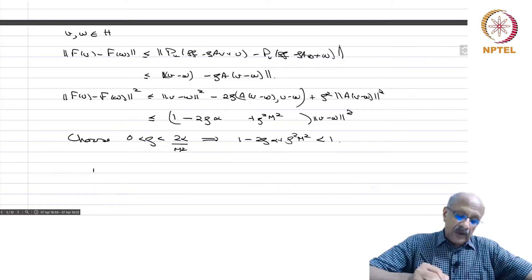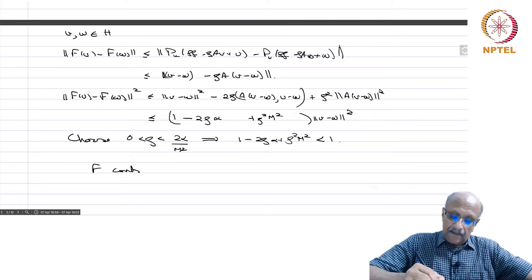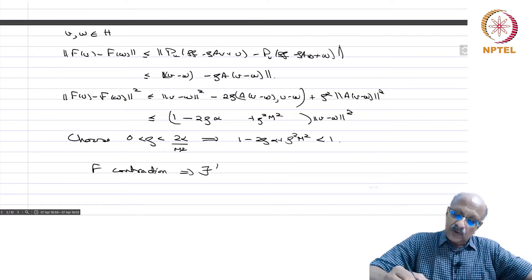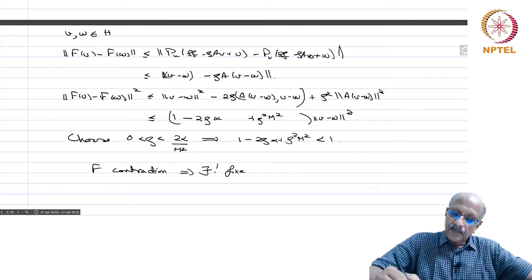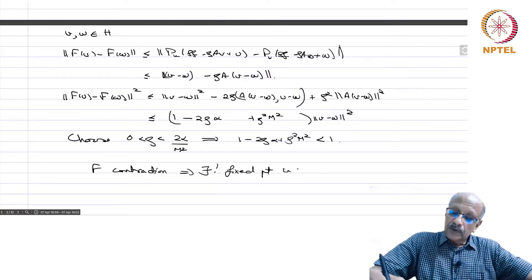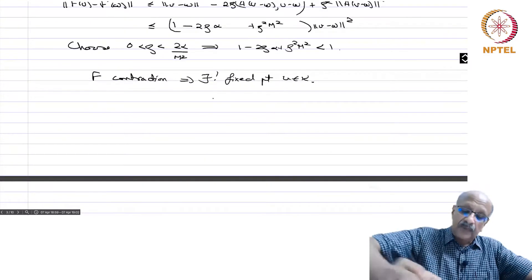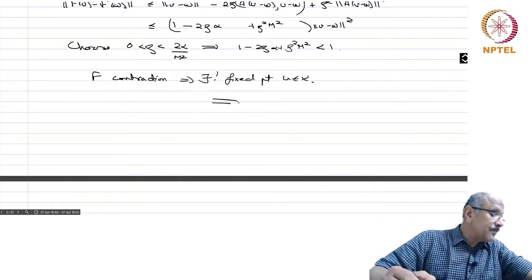Therefore, F is a contraction, which implies there exists a unique fixed point u in K, and that is the point which we are looking for. That completes the proof of the theorem.